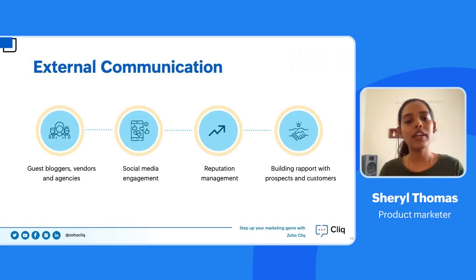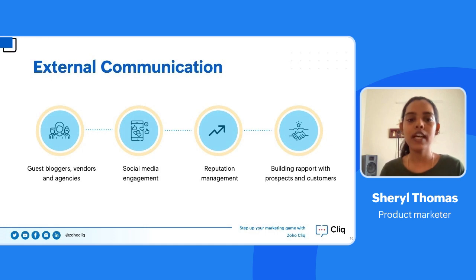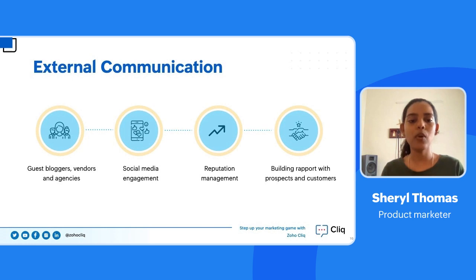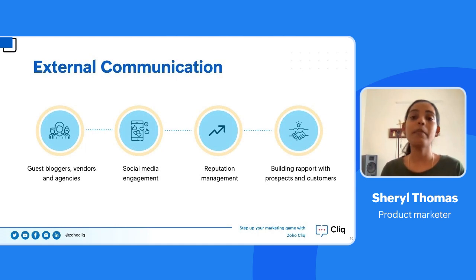Apart from communicating within the team, marketing teams also communicate with people outside the organization — external communication. This happens for different purposes. The first is communicating to get work done. Marketers usually work with external agencies like ad agencies, video agencies, creators, print media influencers, and PR agencies to ensure the product gets maximum reach.